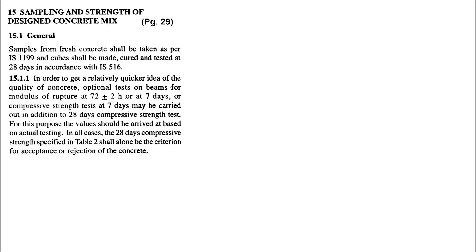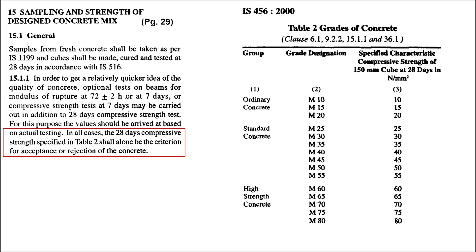Now let us look into another clause of IS 456-2000, that is Clause 15.1.1. The last part of this clause says: in all cases, the 28-day compressive strength specified in Table 2 shall alone be the criteria for acceptance or rejection of concrete. Table 2 of IS 456-2000 stipulates the specified characteristic compressive strength of 150 mm cube at 28 days corresponding to the grade of concrete. However, this clause contradicts the acceptance criteria stipulated in Clause 16 of IS 456-2000. Considering M25 grade of concrete, the compressive strength of 25 N/mm² becomes the criteria for rejection and acceptance as per Clause 15.1.1. Hence, a clarification is required about which clause governs — Clause 16 or Clause 15.1.1 — as far as acceptance criteria of concrete is concerned.